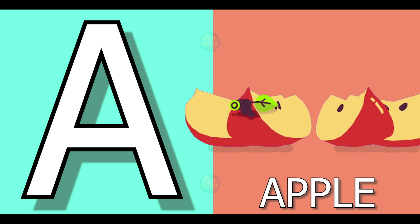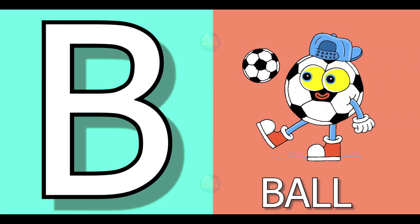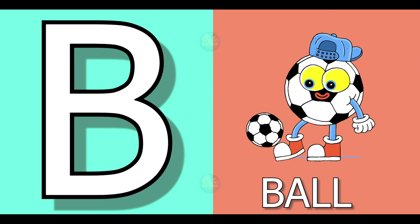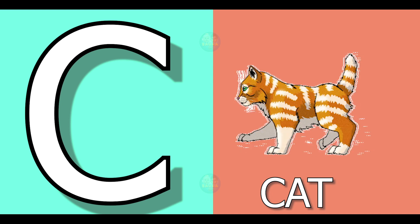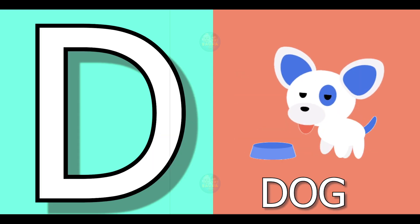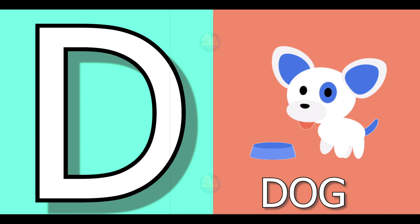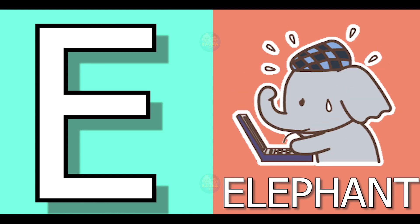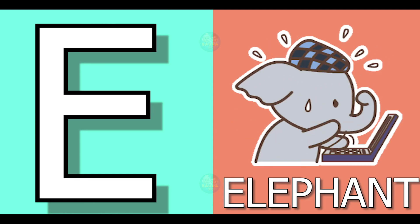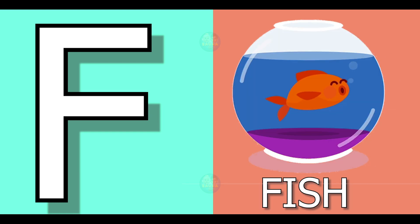A for apple, apple means shape. B for ball, ball means gain. C for cat, cat means billy. D for dog, dog means kutta. E for elephant, elephant means hati. F for fish, fish means machli.